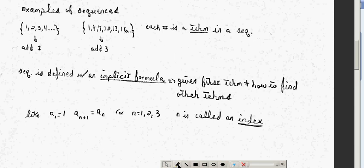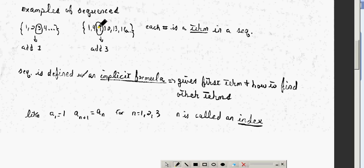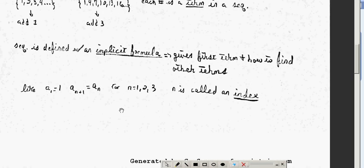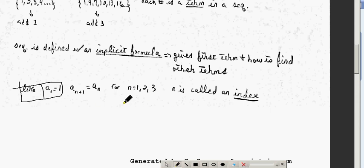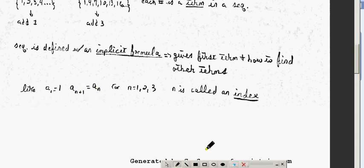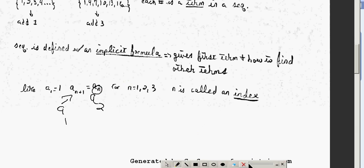Each number in a sequence is called a term — that's just some verbiage. A sequence is defined with an implicit formula, and this takes some getting used to. It gives the first term and how to find the other terms. Your first term is defined as a₁, your second term as a₂, a₃, etc. You will have a_{n+1} equals aₙ, and the subscript n is called an index.